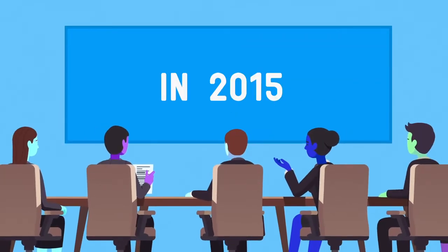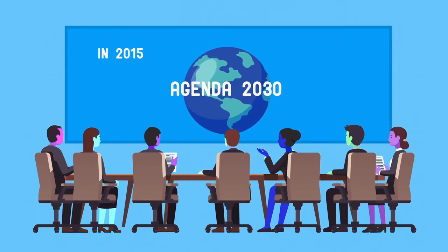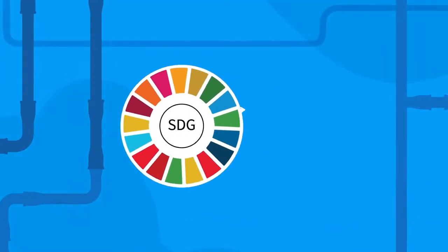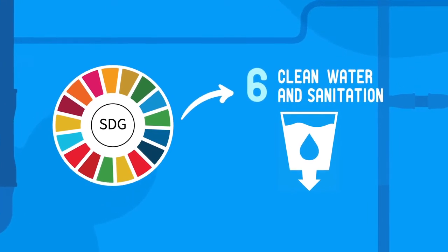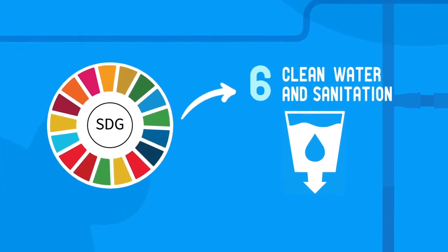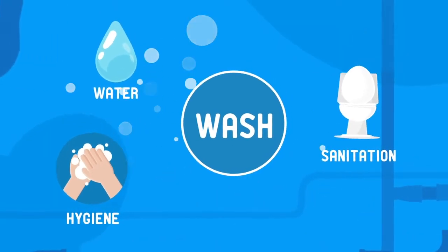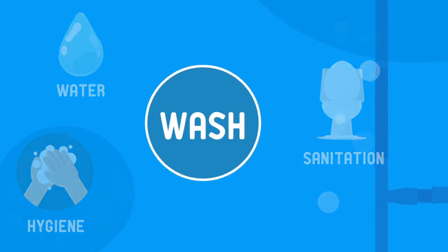In 2015, the world came together through the United Nations and committed to the Agenda 2030, or the Sustainable Development Goals. Sustainable Development Goal 6 aims to ensure availability and sustainable management of water and sanitation for all. UNICEF's Water, Sanitation and Hygiene program contributes to the achievement of Sustainable Development Goal 6.